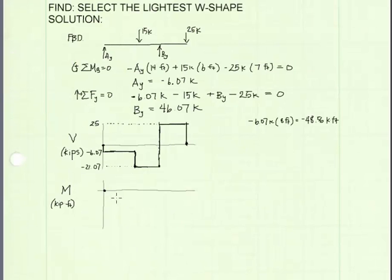For a moment diagram, we're going to start at the left end, and it'll be zero there, where our pin support is. And at 8 feet over, we're going to find that our moment is equal to the area under our shear diagram here, which is calculated here at the side. We'll end up at negative 48.56 kip feet. For the next section of our moment diagram, from 8 feet over to 14 feet, we're going to have again a linear slope, because our shear diagram is constant. And the slope is going to be negative 21.07.